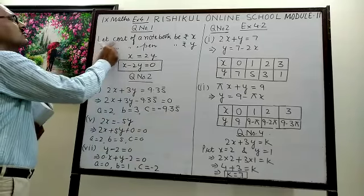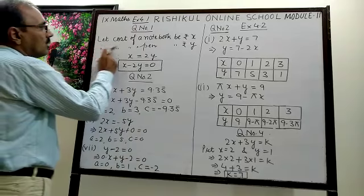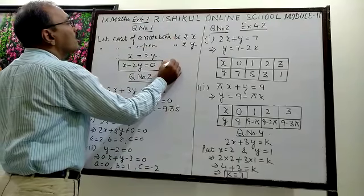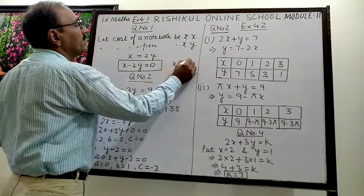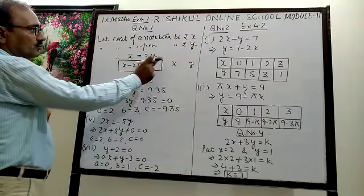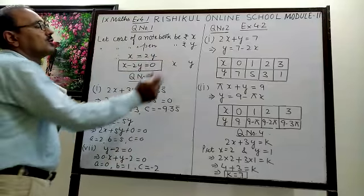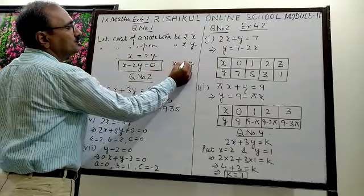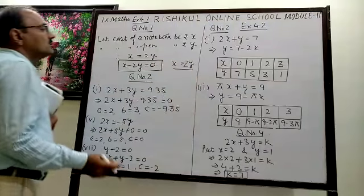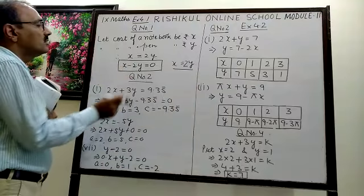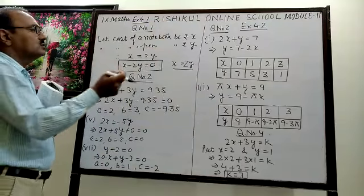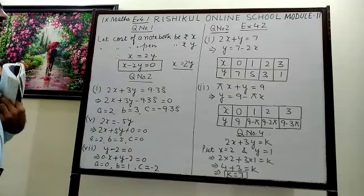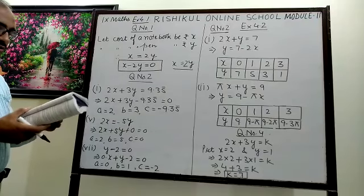Suppose the cost of a notebook is x and the cost of a pen is y. The cost of a notebook is twice the cost of a pen, so if you multiply the cost of the pen by 2, they will be equal. You can write x = 2y, and transferring 2y to the left side, the sign will change: x minus 2y equals 0. This is the linear equation in two variables.